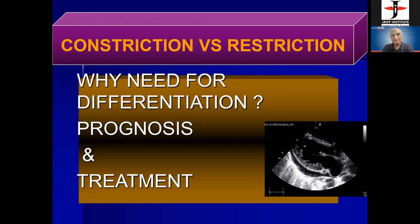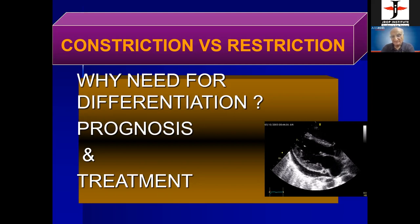I'll discuss this in a very basic manner — don't be frightened, it is not a difficult subject. There are only two slides to understand. The need for differentiation arises because of prognosis and treatment. Constriction has a very good prognosis — the patient may be cured after pericardiectomy or anti-inflammatory drugs. Restriction has poor prognosis and may require cardiac transplantation. Multimodality imaging including echo, CT, and MRI is involved, but here we focus on echo.